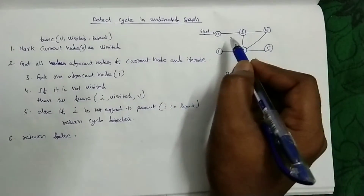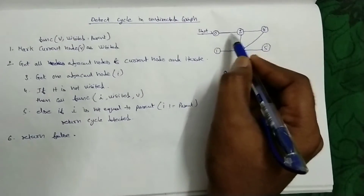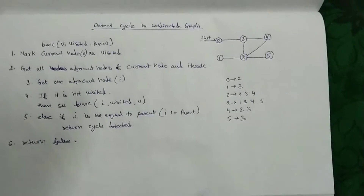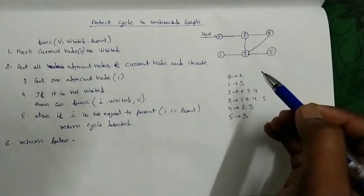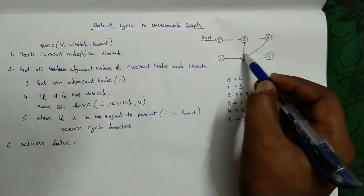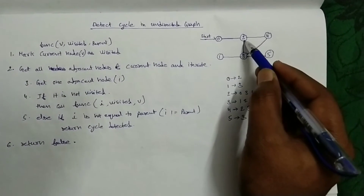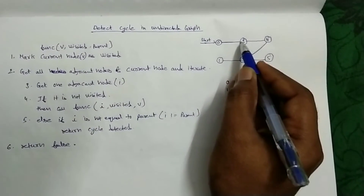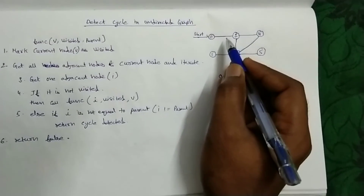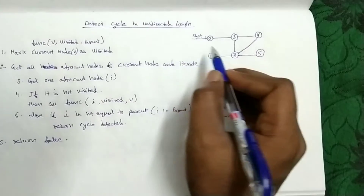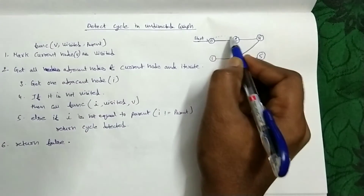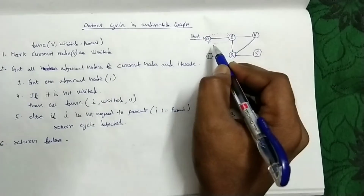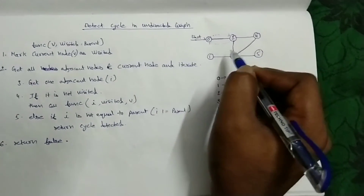An undirected graph looks like this. There would not be just one direction — it is like two directions. There is a path from 0 to 2 as well as 2 to 0. So how to detect a cycle in this graph? As you can see, this is a cycle: 2, 4, 3, 2. And there is a path from 0 to 2 as well as 2 to 0, but that is not considered as a cycle in undirected graph. If it is a directed graph, the arrows will be like this, and then this will be considered as a cycle. But in undirected graph, this is not a cycle.